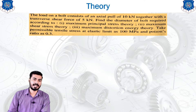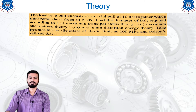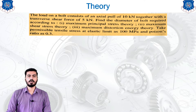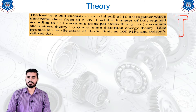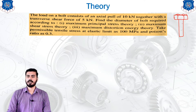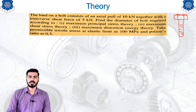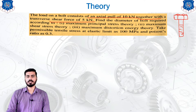Now we will see our next example. The data is given through the yellow patch. The load on the bolt — a bolt, which is the fastener consisting of a head and its body with a threaded region — is given. The bolt consists of an axial pull of 10 kilo Newton together with a transverse shear force of 5 kilo Newton.